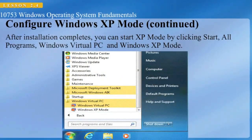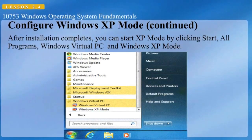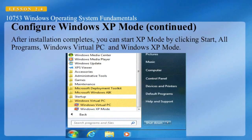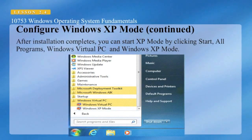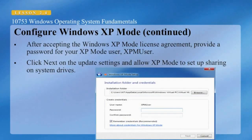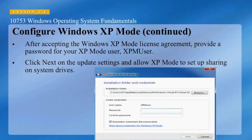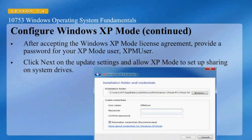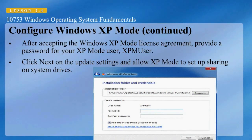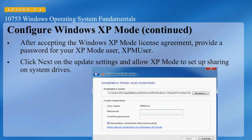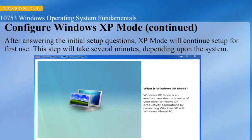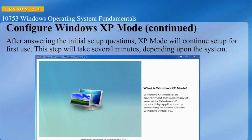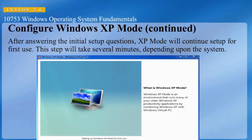After the installation completes, you can start XP mode by clicking Start, All Programs, Windows Virtual PC, and Windows XP mode. Once you click Windows XP mode, accept the XP mode license agreement and click Next. After accepting the license agreement, provide a password for your XP mode user account, which is called XPMUser. Click Next on the update settings and allow XP mode to set up sharing on system drives. XP mode will then continue setup for first use, which will take several minutes depending on the system.